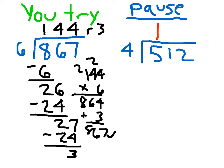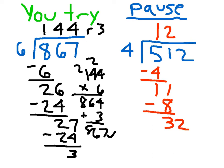For the second U-try problem: 5 divided by 4 is 1. 1 times 4 is 4. 5 minus 4 is 1. Bring down the 1. 11 divided by 4 is 2, because 2 times 4 is 8, and 11 minus 8 is 3. Bring down the 2. 32 divided by 4 is 8. 8 times 4 is 32. 32 minus 32 is 0. We don't write remainder 0. So 512 divided by 4 is 128. That's long division, or column division.